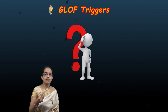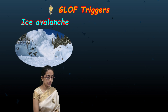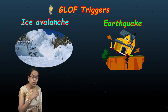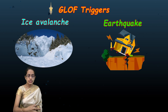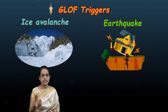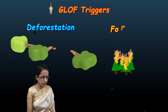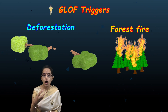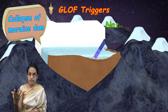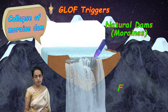How does GLOF actually get triggered? The reasons are quite straightforward. There could be an avalanche, significant earthquakes, or anthropogenic activities such as deforestation and burning of forest areas. There could also be a collapse of the moraine dams — the natural dams we discussed — which can fail in certain ways.